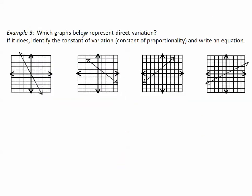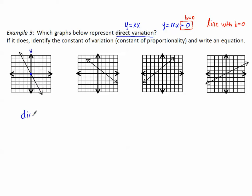Example 3: which graphs below represent direct variation? Y equals kx is direct variation. This graph goes through the origin — y-intercept of 0. Remember that y equals kx is like saying y equals mx plus 0, where b equals 0. So for direct variation, the graph must be a line with a y-intercept of 0. This one has that, so this is direct variation.